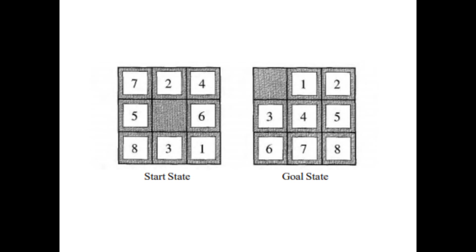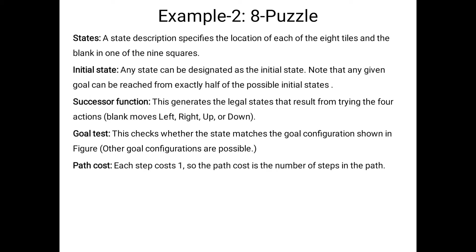Our goal is to convert the left-side configuration to the right-side: first box empty, then one, two, three, four, five, six, seven, eight. The goal test checks whether the current state matches this goal configuration. If we achieve that result, we win; otherwise we lose. The path cost considers each move as cost one, so the total number of moves gives the path cost.